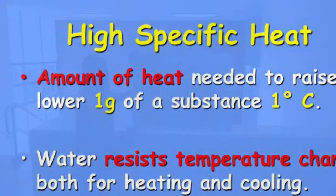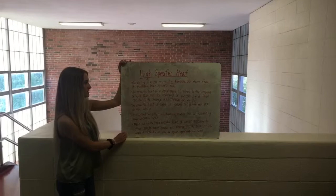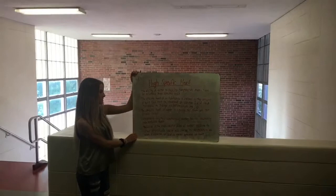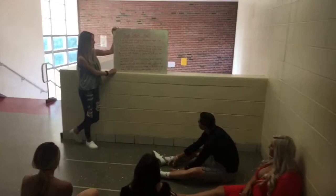Chapter 5: High Specific Heat. The ability of water to resist temperature change is referred to as its specific heat. Specific heat is defined as the amount of heat that must be absorbed or lost for one gram of a substance to change temperature by one degree Celsius. The specific heat of water is one calorie per gram per degree Celsius. Compared to other substances, water has a very high specific heat, meaning water will change temperature less when it absorbs a given amount of heat.